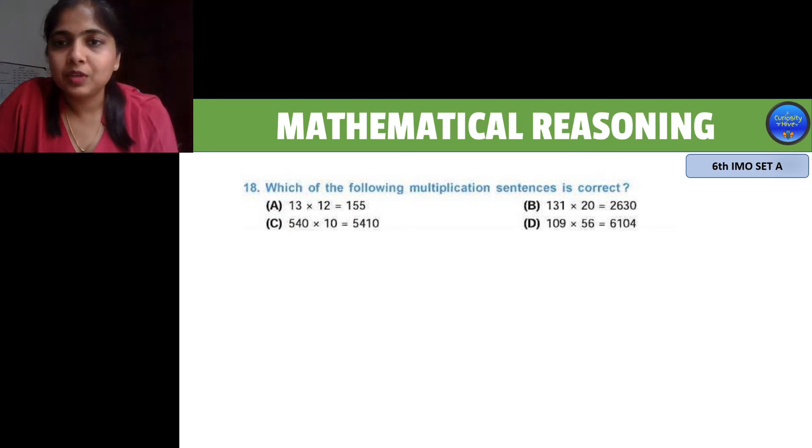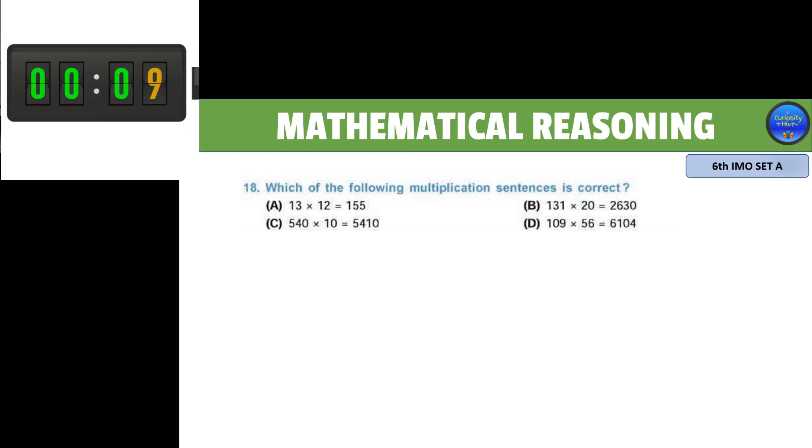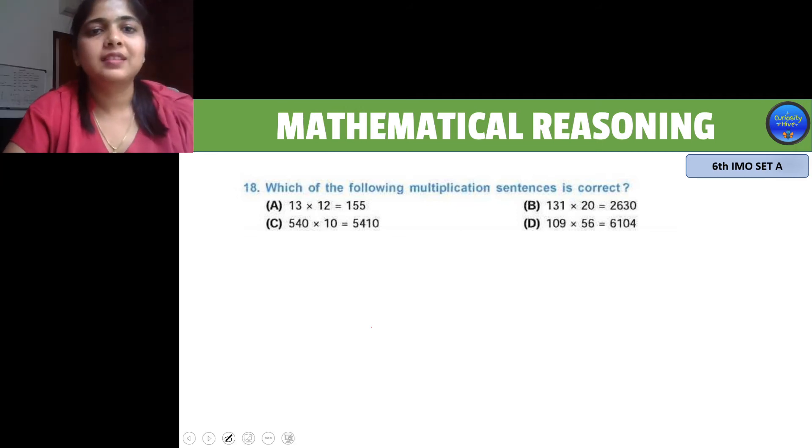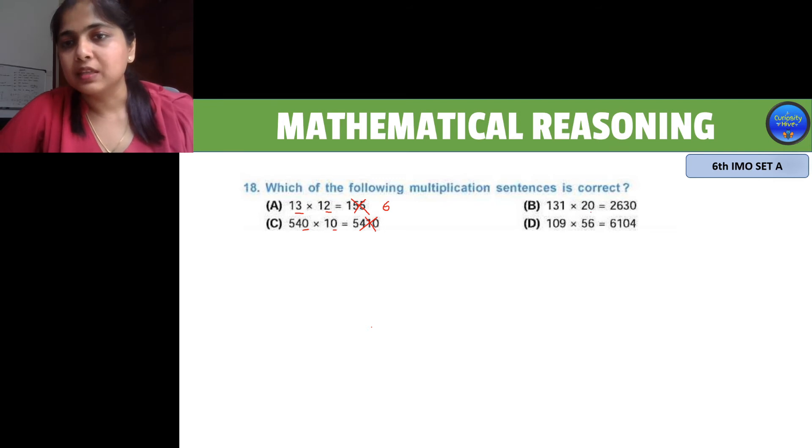Here is a smart tip. The first one is 13 times 12. Just look at 3 and 2. If you multiply 3 and 2, your 1's digit should be 6, not 5. So this is definitely not the right multiplication. For option C, 540 into 10 has 2 zeros, so your answer should have 2 zeros, but that's not happening. For option D, there should be 1 zero, which is right, but 2 times 1 is 2, and in the 10's place it is 3, so this is also incorrect.